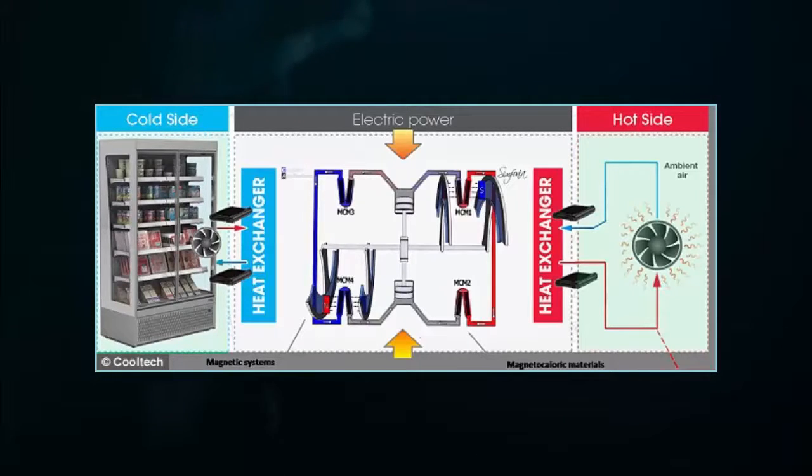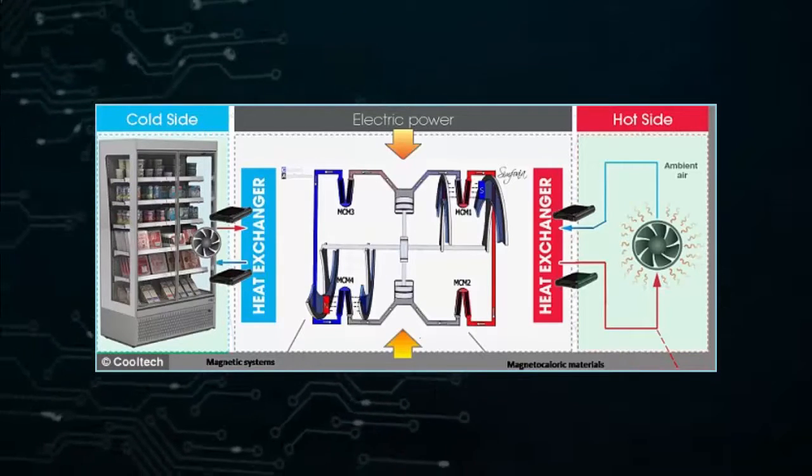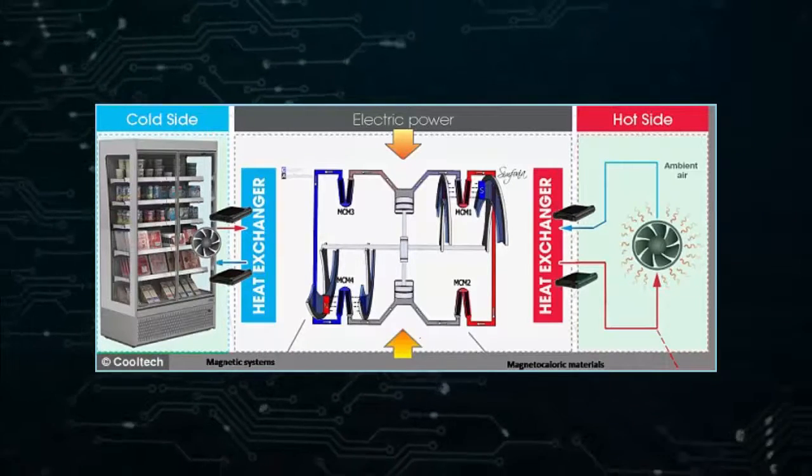Refrigerators are constantly drawing electricity and account for about 17% of global electricity consumption, the firm explains. As magnets do not require an energy source, the new system would be far more efficient.